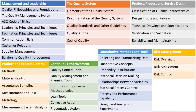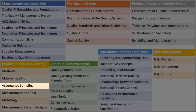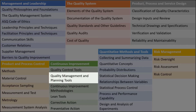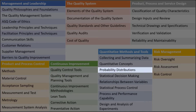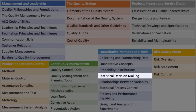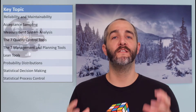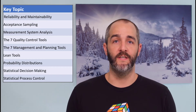Here they are in order of how they appear in the body of knowledge: reliability and maintainability, acceptance sampling, measurement system analysis, the seven QC tools, the seven management and planning tools, lean tools, probability distributions, statistical decision making, and statistical process control. These nine topics will make up the bulk of the CQE exam.